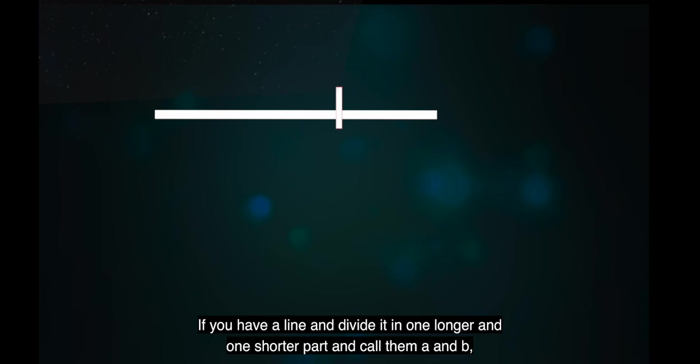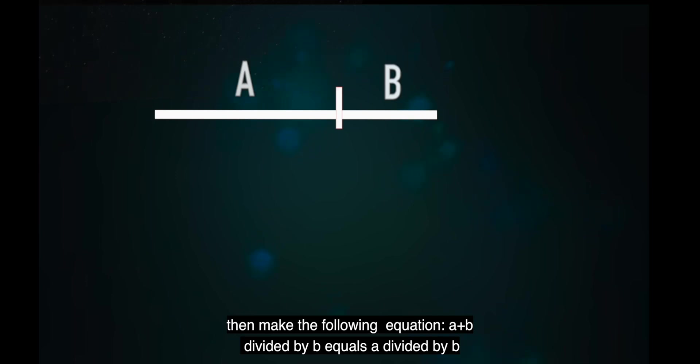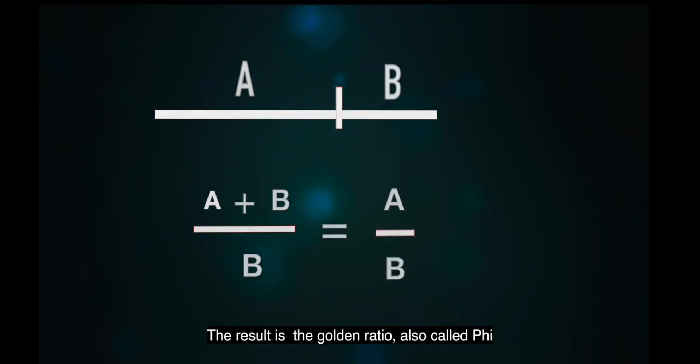If you have a line and divide it into one longer and one shorter part and call them a and b, then make the following equation: a plus b divided by b equals a divided by b. The result is the golden ratio.